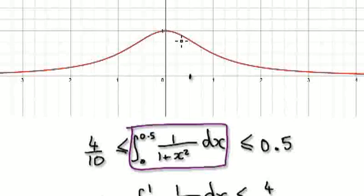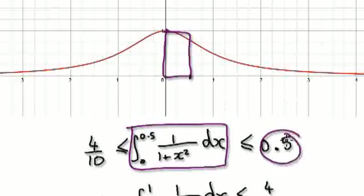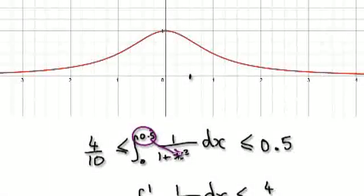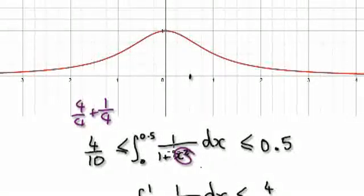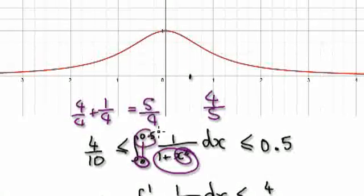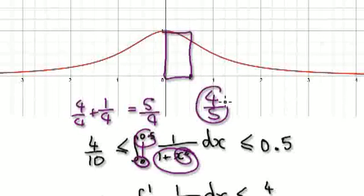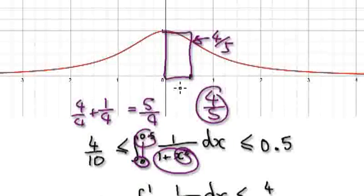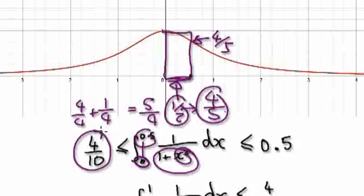Looking at this area, the biggest that this could be would be a half. The lowest that this could be: if you put a half into here, then a half squared is a quarter, plus one — that's four over four — so adding the two together gives five over four. Then one over that is four over five. Because the width is a half, you get a half times four over five, which gives you four over ten.